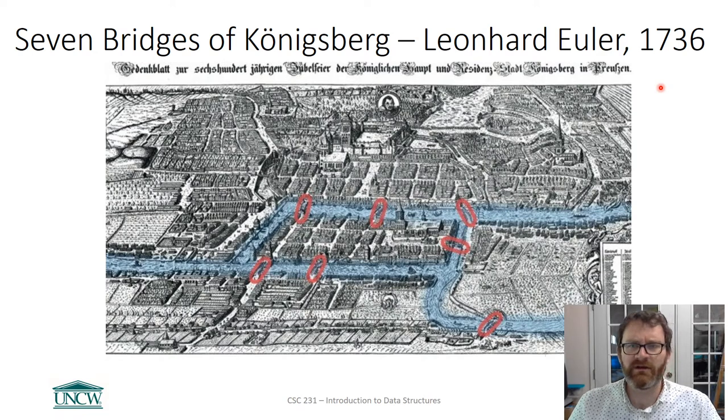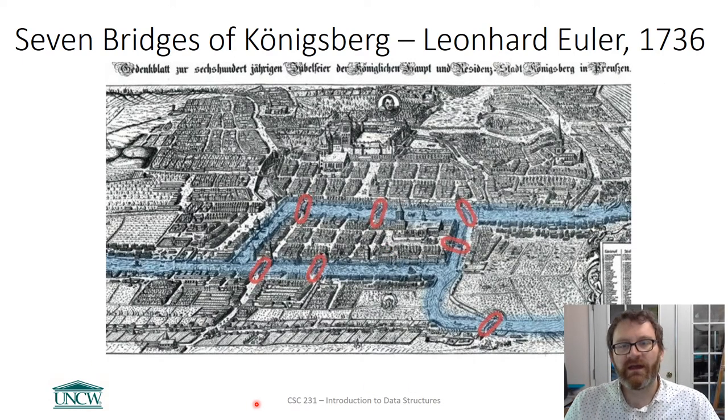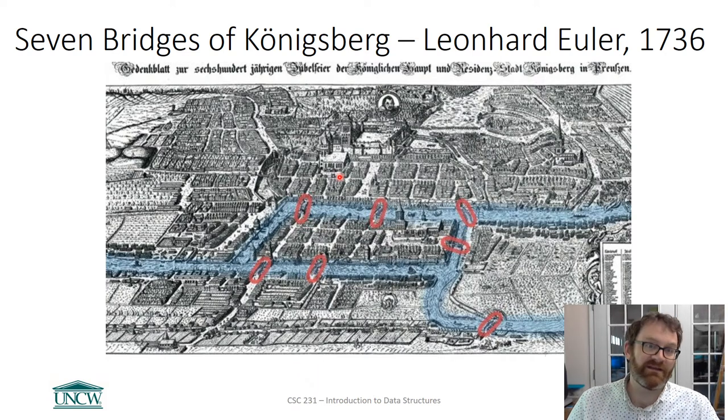Way back in the 1700s, Leonard Euler, one of the most famous mathematicians, he gave us the little E, the natural logarithm. He lived in a place called Königsberg. And he liked to take walks to kind of clear his head.